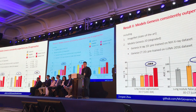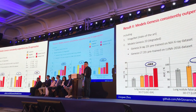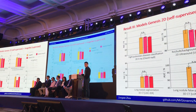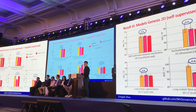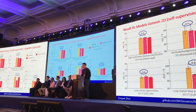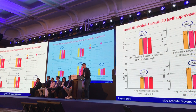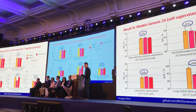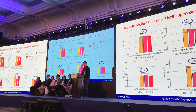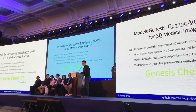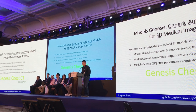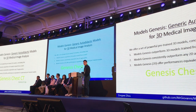We introduce a 2D Model Genesis to have an apple-to-apple comparison with ImageNet models. As shown in the figures, our 2D Model Genesis offers performance equivalent to ImageNet models. This result is unprecedented because no self-supervised method has thus far performed as well as ImageNet models. Through all seven applications, we envision that our Model Genesis may serve as the primary resource for 3D transfer learning in medical images.